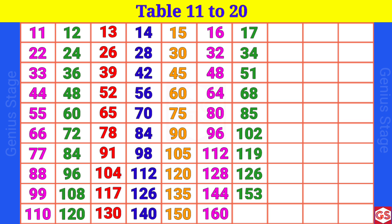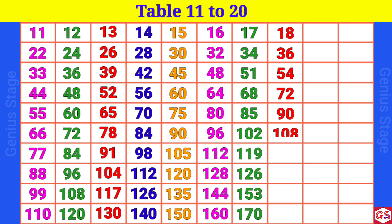17 10s are 170. 18 1s are 18, 18 2s are 36, 18 3s are 54, 18 4s are 72, 18 5s are 90, 18 6s are 108, 18 7s are 126, 18 8s are 144, 18 9s are 162.